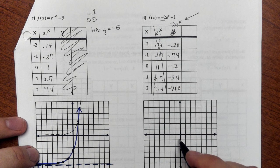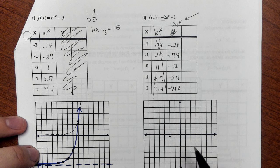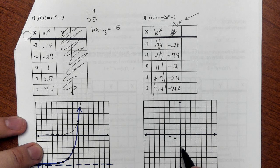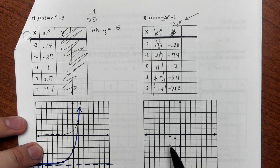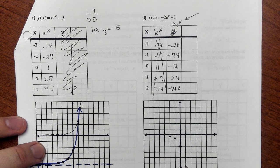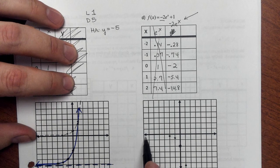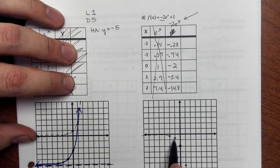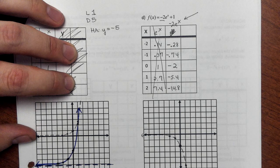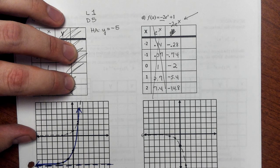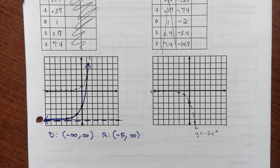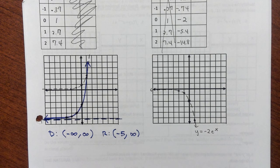Alright. So negative 2, negative 0.28. Maybe about there. Negative 1, negative 0.74. So that's almost 3 fourths. So about there maybe. 0, negative 2. And again, this graph is a little bit wonky. 1, negative 5.4. Well, negative 5.4 is about here. So this is the graph with everything but the translations. This is y equals negative 2e to the x. I'm sorry. I went a little bit off the image again. That is y equals negative 2e to the x.